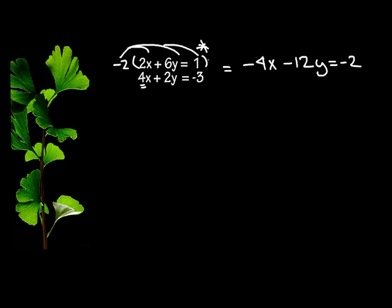Now this one's really important and a lot of students forget to do it. You have to multiply to everything, not just the first couple numbers, okay? Now the second one I'm just going to leave alone. 4x plus 2y equals negative 3.